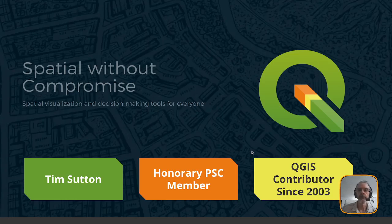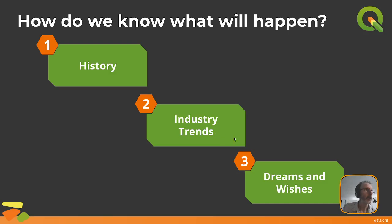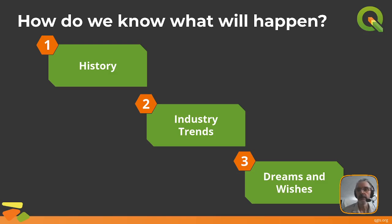In this talk I will discuss what I think might be happening in the future of the QGIS project — a little bit of crystal ball gazing. I'll approach the topic from three perspectives: first, the history of what's been happening in QGIS and how that might project into the future; second, what external industry trends are taking place; and third, some wishes and dreams for nice features and improvements I'd like to see.